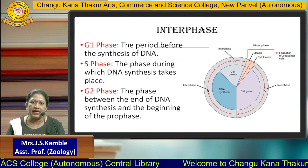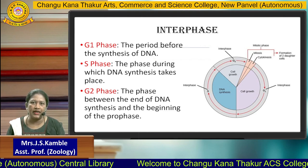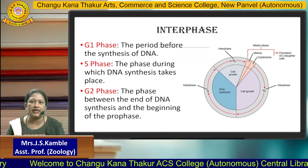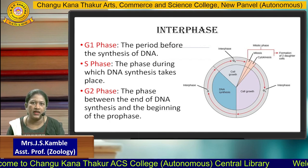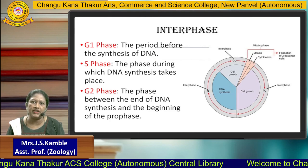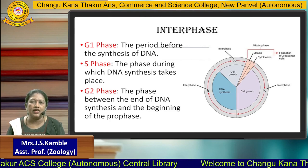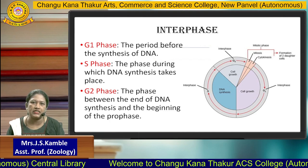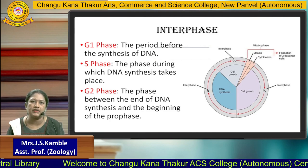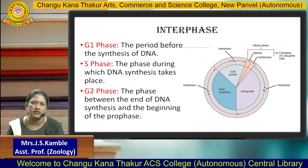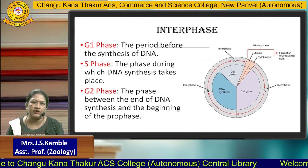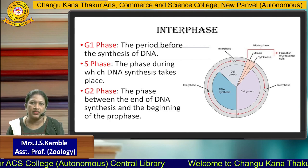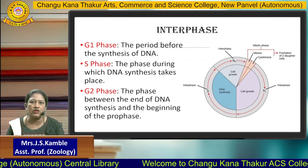G1 phase is also called gap 1 phase. It is the period before the synthesis of DNA takes place. The second phase is S phase, that is the synthesis phase — the phase during which DNA synthesis takes place. Not only DNA, but other cellular organelles are also synthesized in the S phase. The third phase is G2 phase, also called gap 2 phase. This phase is between the end of DNA synthesis and the beginning of prophase.